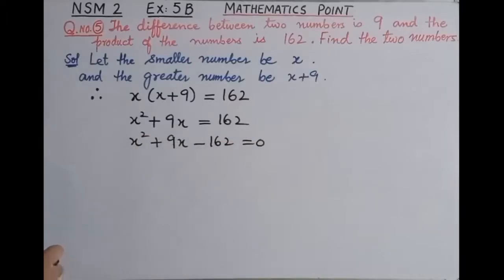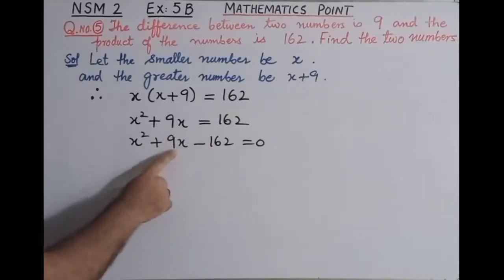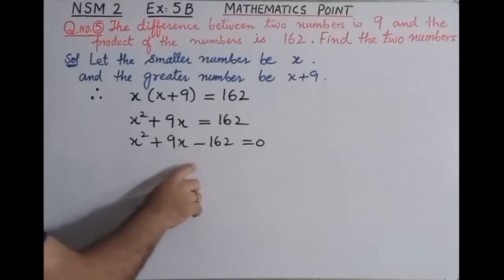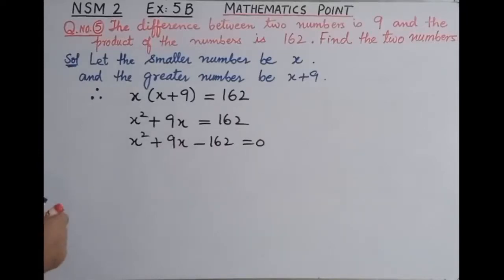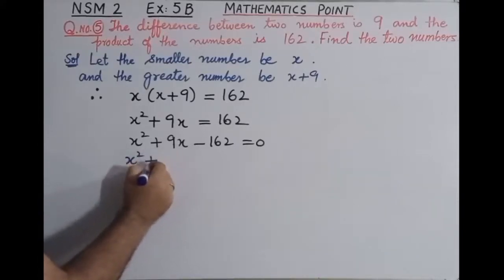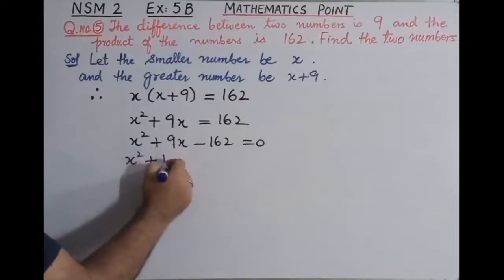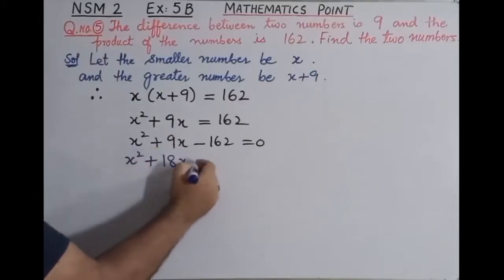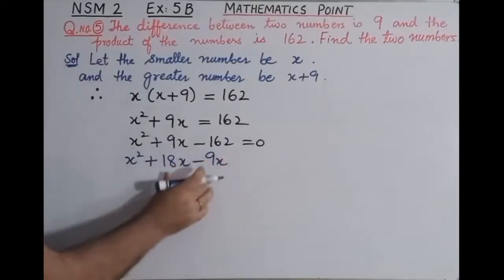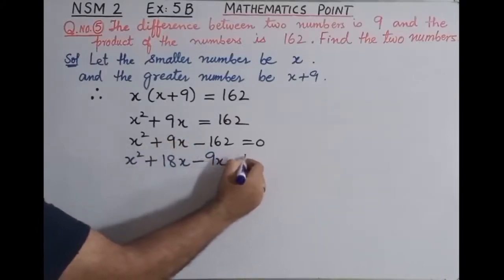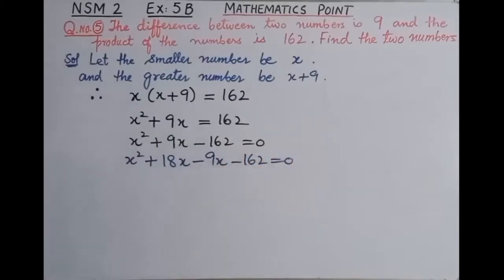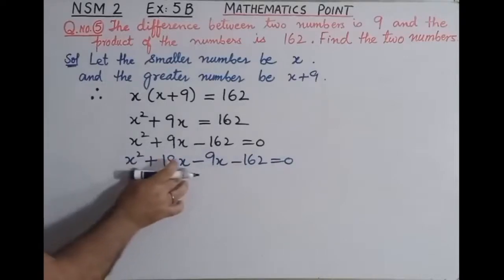अब students को इससे दो नंबर सोचने हैं जिनको multiply करें तो minus 162 आए और उनको add या subtract करें तो plus 9x आए। अगर आप 18 को 9 से multiply करते हैं तो 162 आता है। middle term को split करते हुए हम x square लिखेंगे और sign देखते हुए 18x के साथ plus और 9x के साथ minus लगाएंगे। 18x में से 9x minus करते हैं तो middle term plus 9x आती है, और last constant value minus 162 लिखेंगे equal to zero।